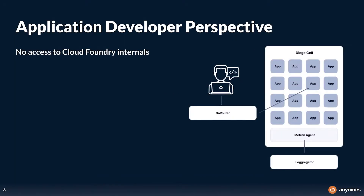In Cloud Foundry, applications run in Garden containers, which are distributed over several Diego cells. A Metro agent running in a Diego cell not only collects logs, it also collects the metrics from each container and sends them to the log aggregator. This is a simplified representation of how this works inside Cloud Foundry. An application developer doesn't have access to this data processed by the log aggregator — they only own their own application.